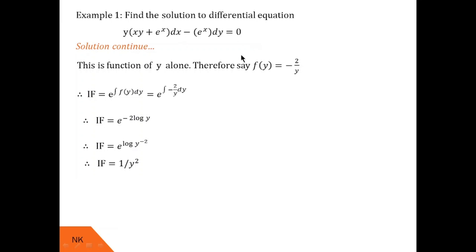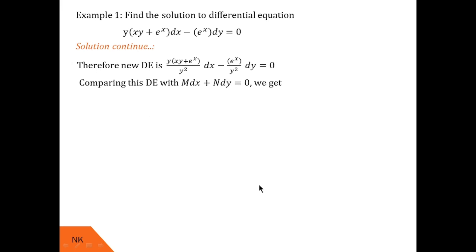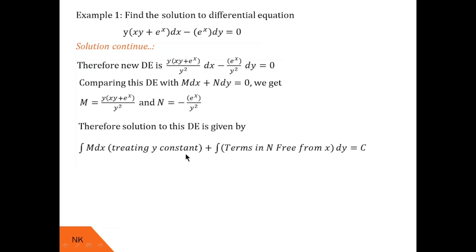We multiply the given differential equation by the integrating factor 1/y² to convert it into an exact differential equation. After multiplying, the new differential equation becomes [y(xy + eˣ)/y²] dx + [−eˣ/y²] dy = 0. Comparing this with M dx + N dy = 0, we get new M and N. Since this is now exact, its solution is given by: ∫M dx (treating y constant) + ∫(terms in N free from x) dy = c.